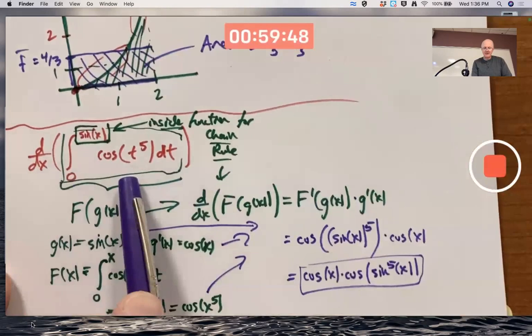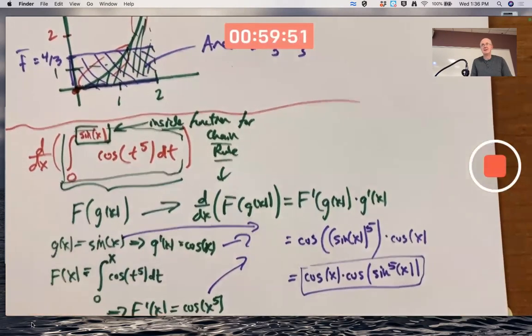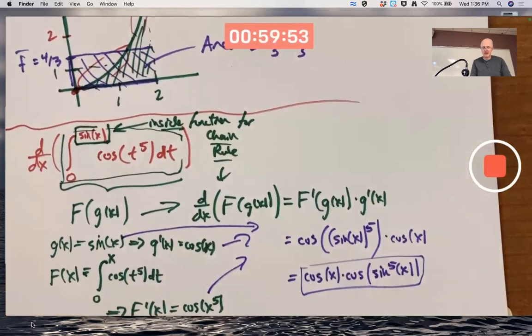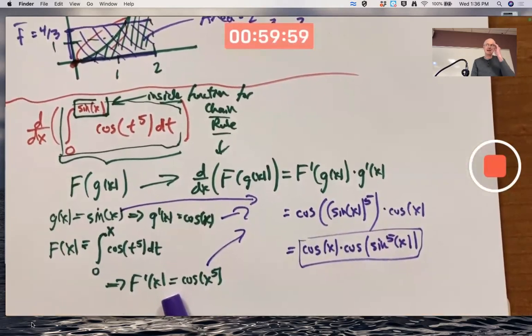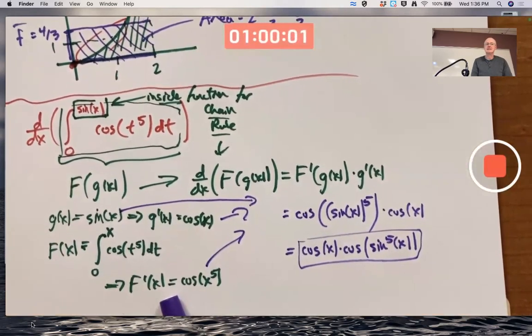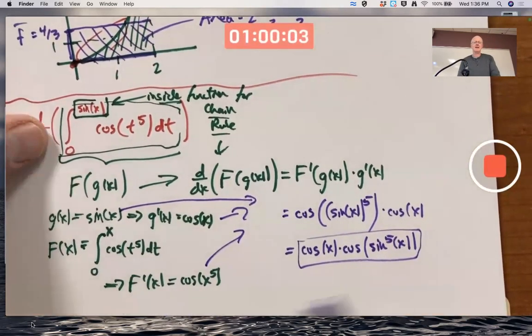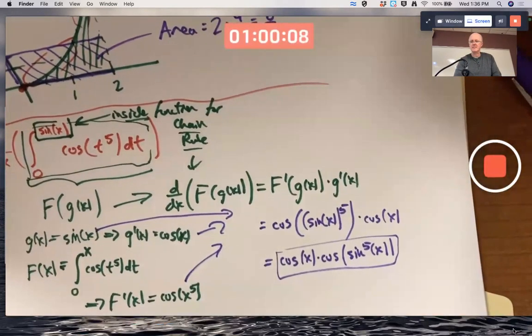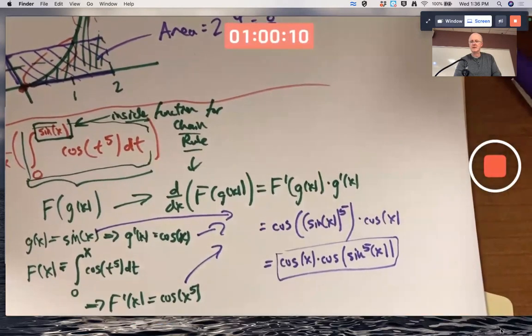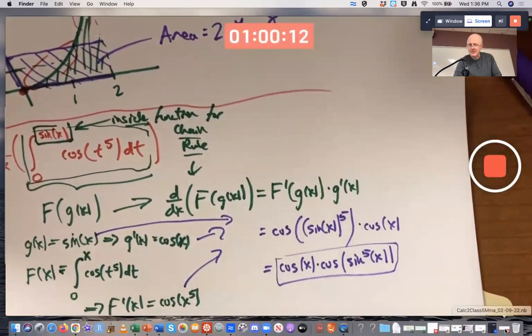We did not integrate first and then differentiate. We just differentiated the integral using theorems, the chain rule and the FTC. Is it really right? Can Mathematica check this? I think it can. I think I've done this before. There it is.